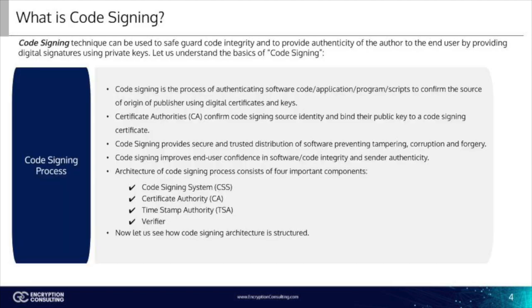Code signing is the process of authenticating software code, application programs, scripts, etc., to confirm the source of origin of the publisher using digital certificates and keys. Certificate authorities, or CAs, confirm code signing source identities and bind their public key to a code signing certificate. Code signing provides secure and trusted distribution of software, preventing tampering, corruption, and forgery. Code signing improves end user confidence in software and code integrity and sender authenticity.